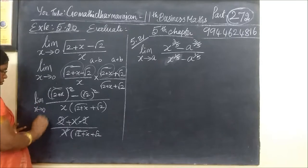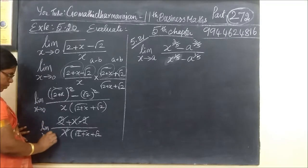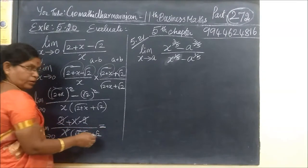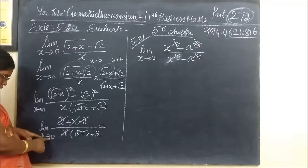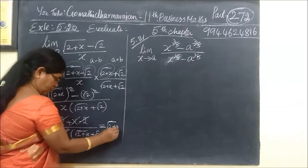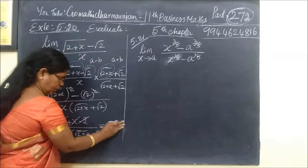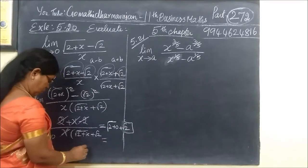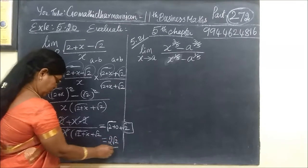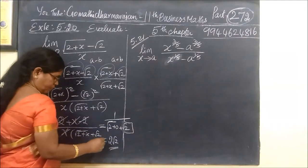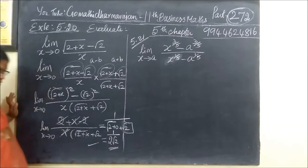As the limit extends to 0, we apply the limit directly. Substituting x = 0: root(2 + 0) plus root(2) gives root(2) plus root(2), which equals 2·root(2). So the denominator is 2·root(2), and the answer is 1 divided by 2·root(2). Answer check confirms this is correct.